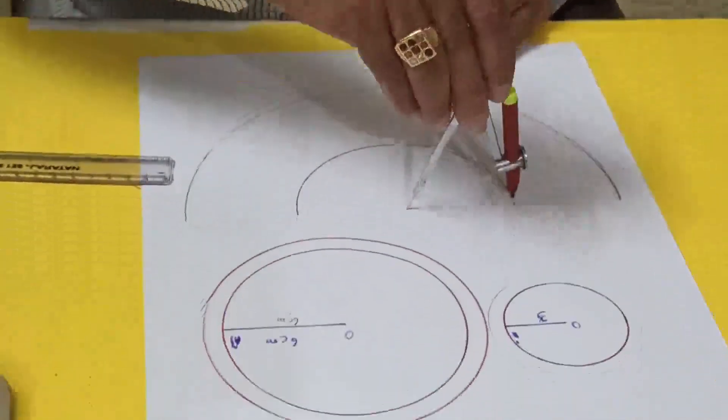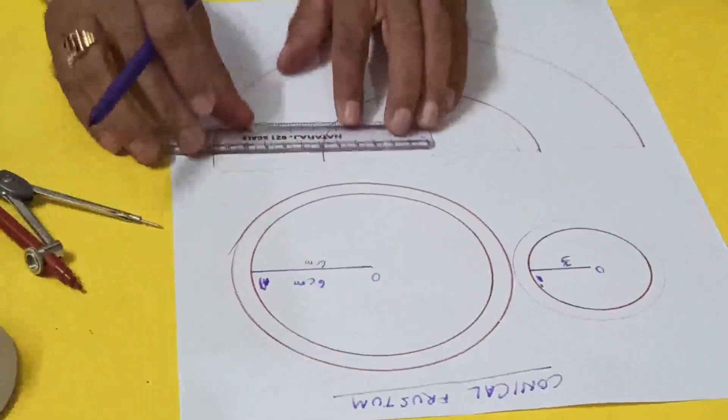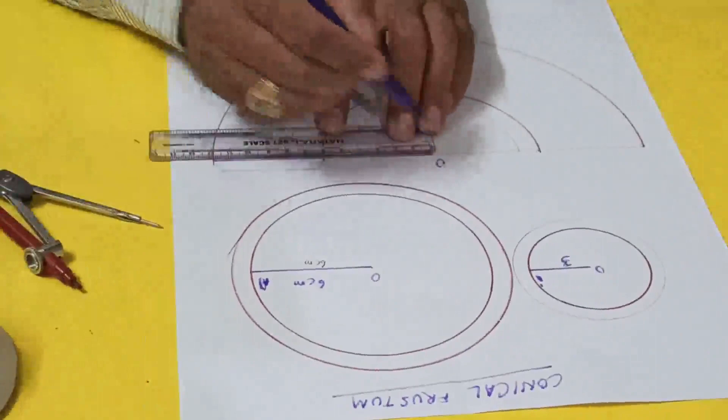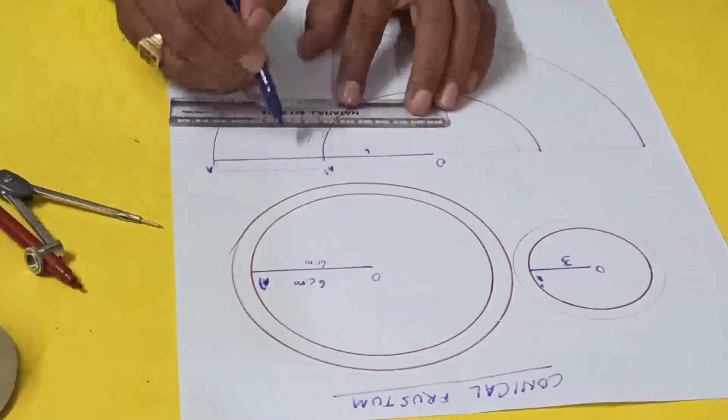Here I have taken this as O, a radius. This one is six centimeters, this one is six centimeters, so total is 12 centimeters.